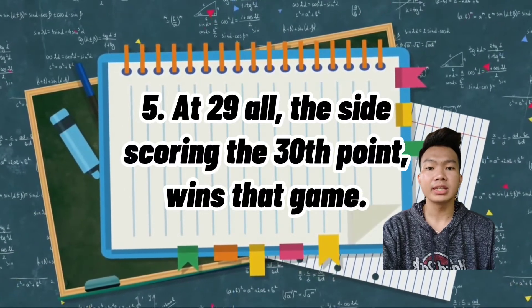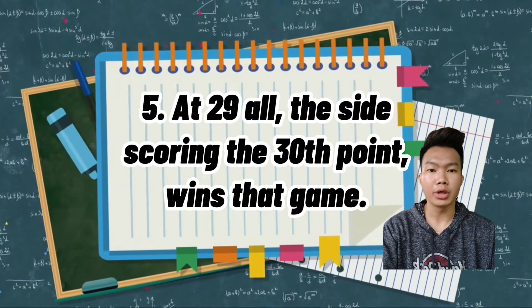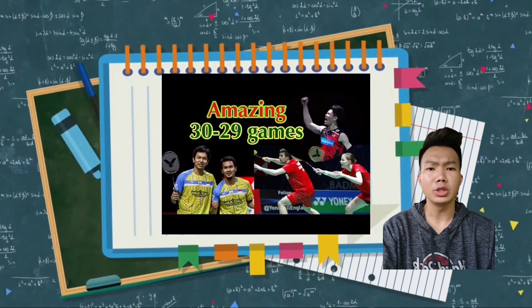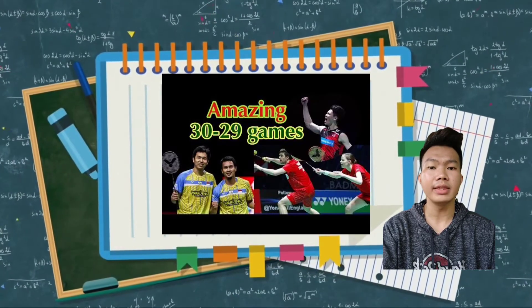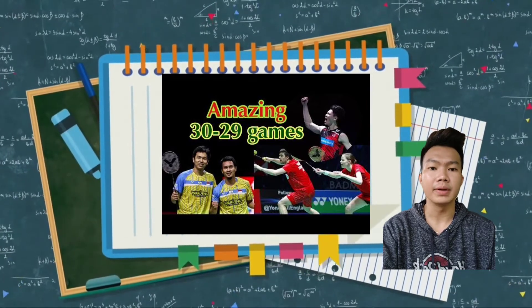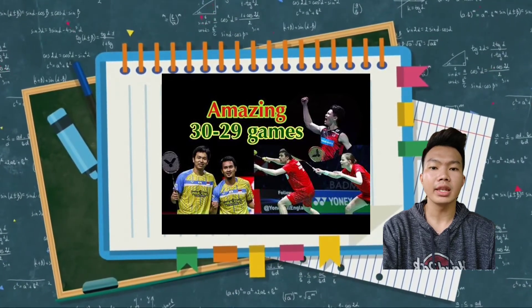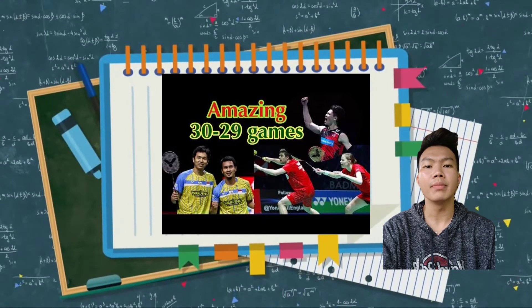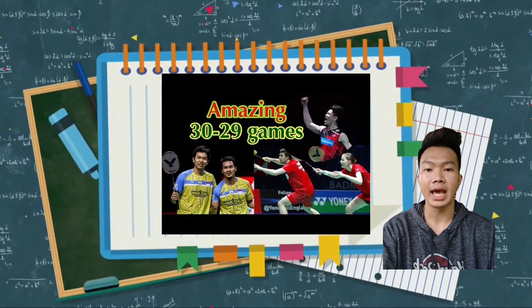Number five, at 29 all, the side scoring the 30th point wins that game. When two players or pairs tie at 29, whoever scores first is the winner. Kapag ang score ay 29, kung sinong player or pair ang unang makakaiscore ang siyang panalo.